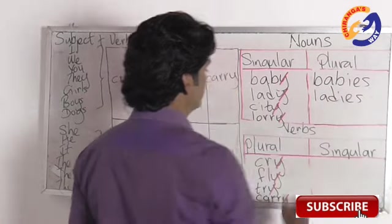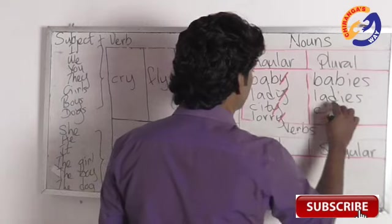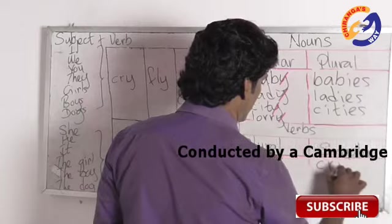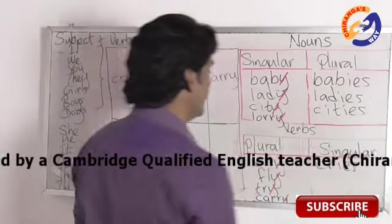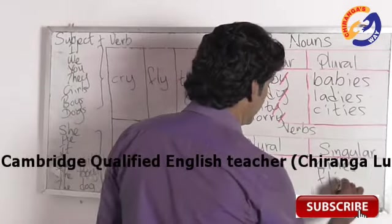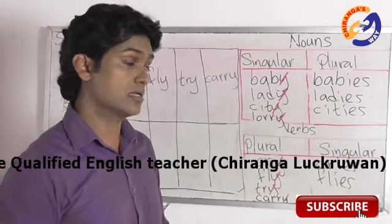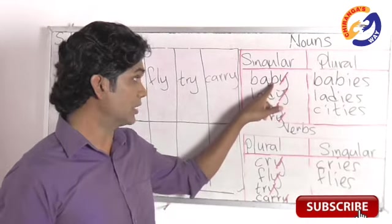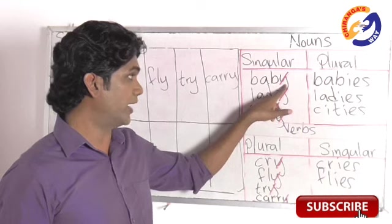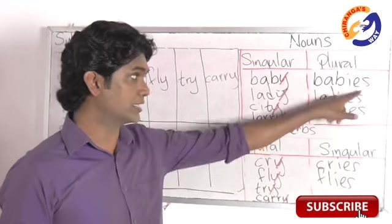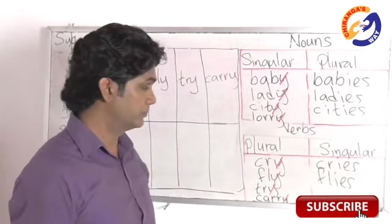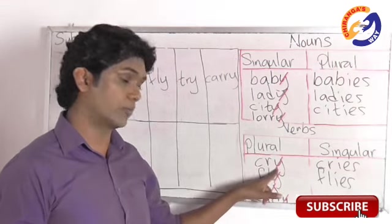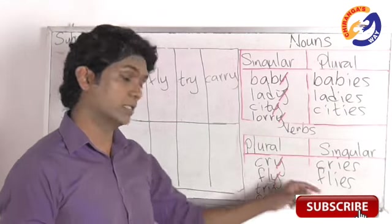We drop 'y' and add 'ies'. 'Lady' becomes 'ladies', 'city' becomes 'cities', 'cry' becomes 'cries'. If the noun ends in 'y' with a consonant before it, we drop 'y' and add 'ies' to make the noun plural. If the verb ends in 'y' with a consonant before it, we drop 'y' and add 'ies' to make it singular.